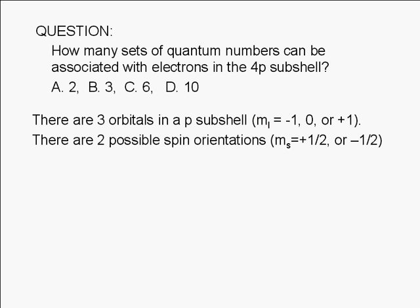Each electron can have two possible spin orientations, spin up or spin down.